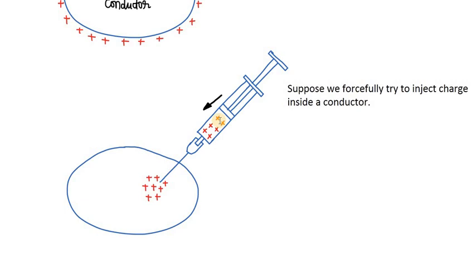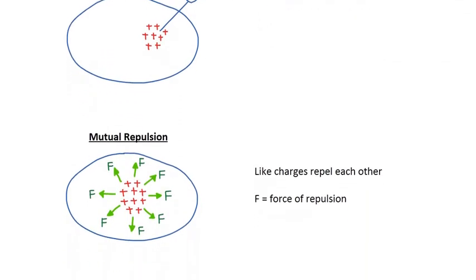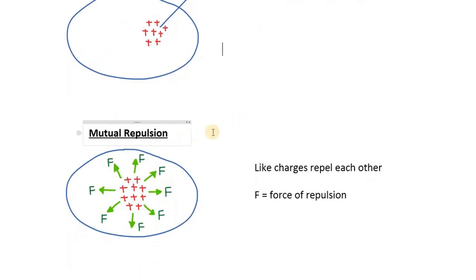Suppose that a certain amount of positive charge is injected deep inside the core of the metal. Now what will happen after this? When these positive charges accumulate at a certain place inside the conductor, mutual repulsion will happen between the charges.